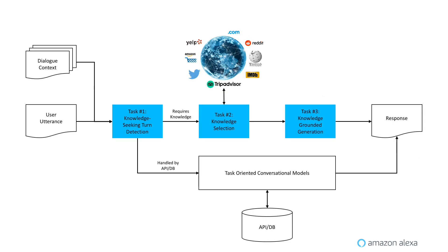We propose a simple architecture which decouples turns that can be handled by existing task-oriented systems with no extra knowledge, and other turns that require external knowledge sources. We focus on the second branch with external knowledge, using a pipelined sequence with three main tasks: knowledge-seeking turn detection, knowledge selection, followed by knowledge-grounded response generation.